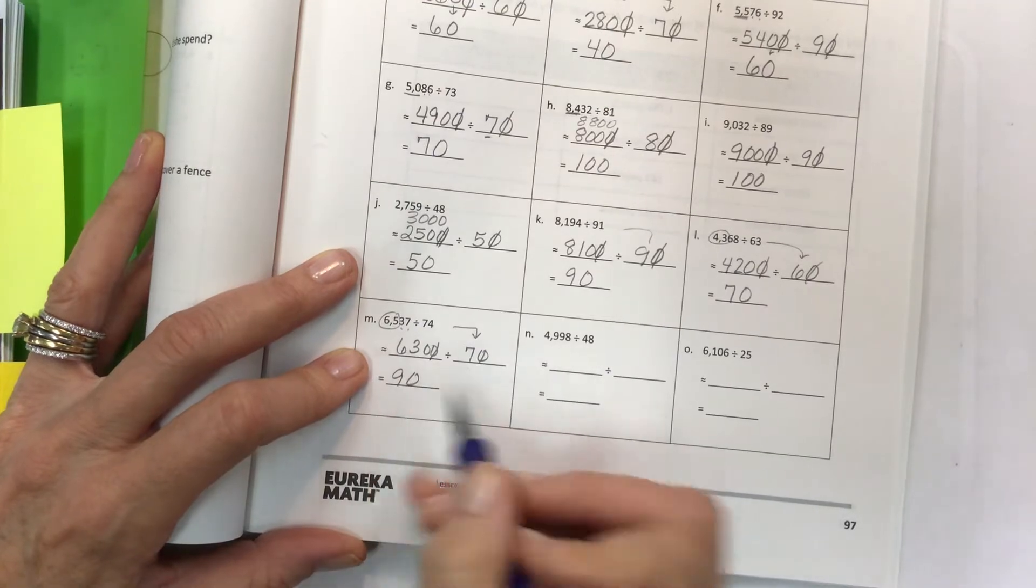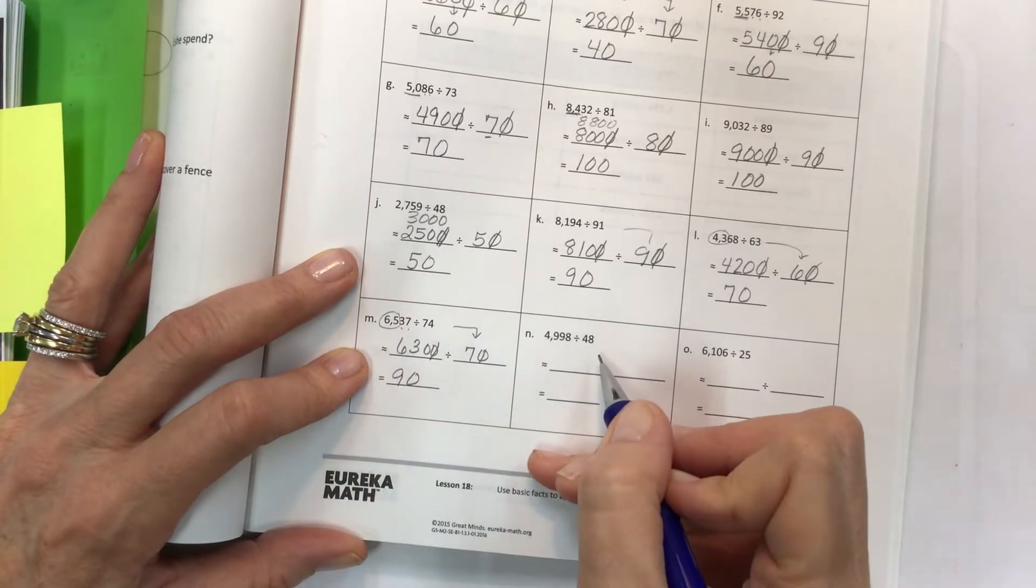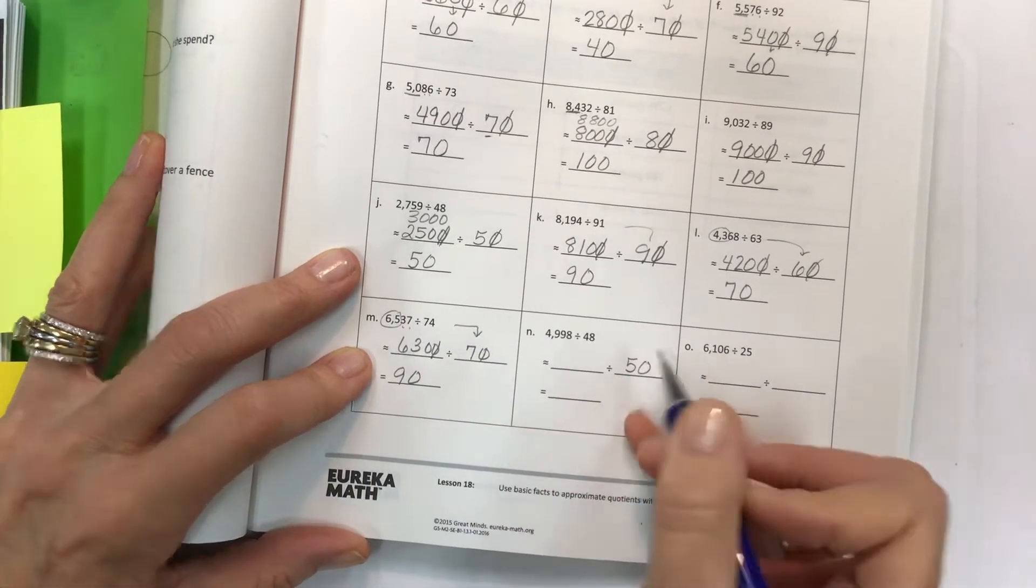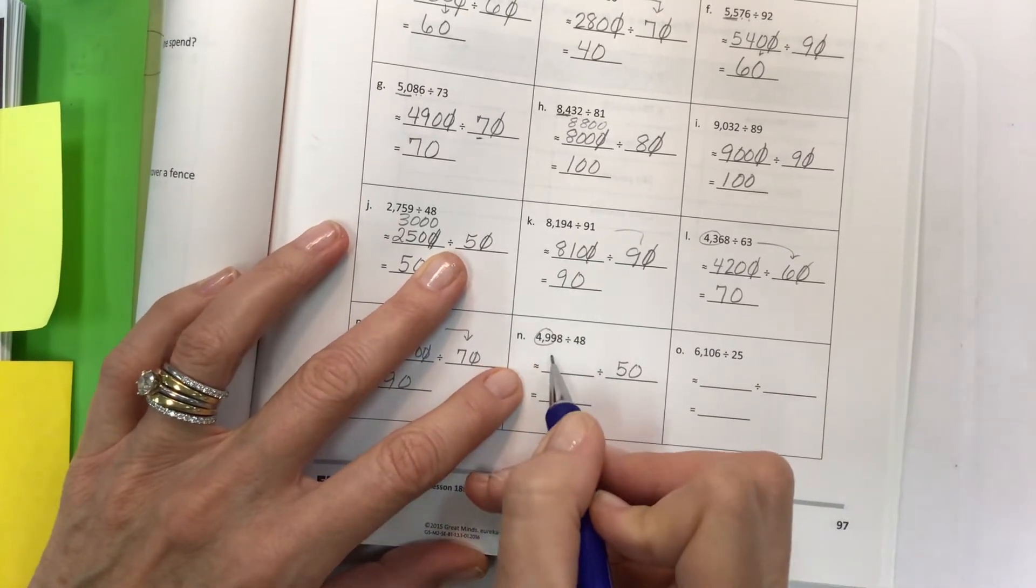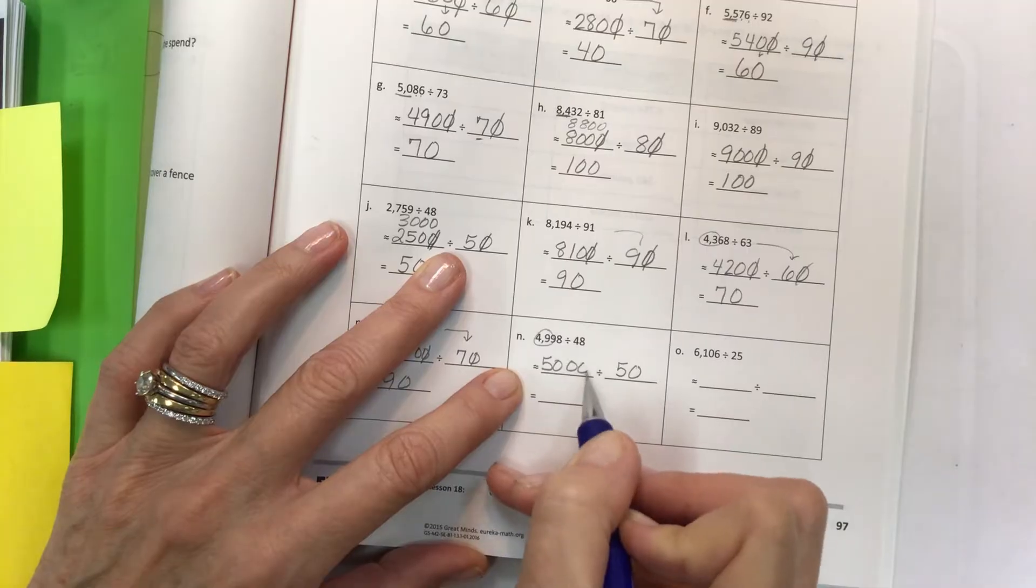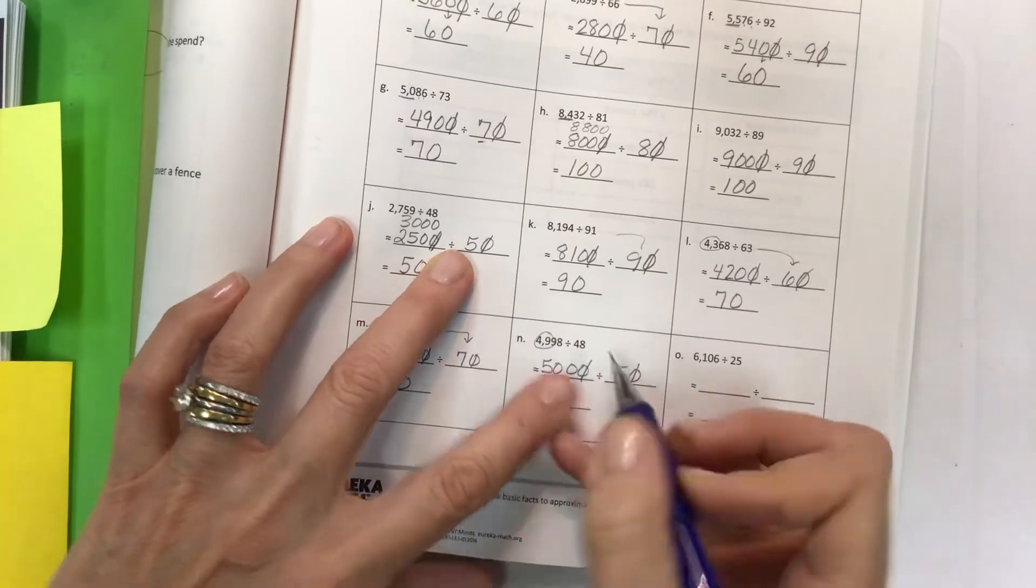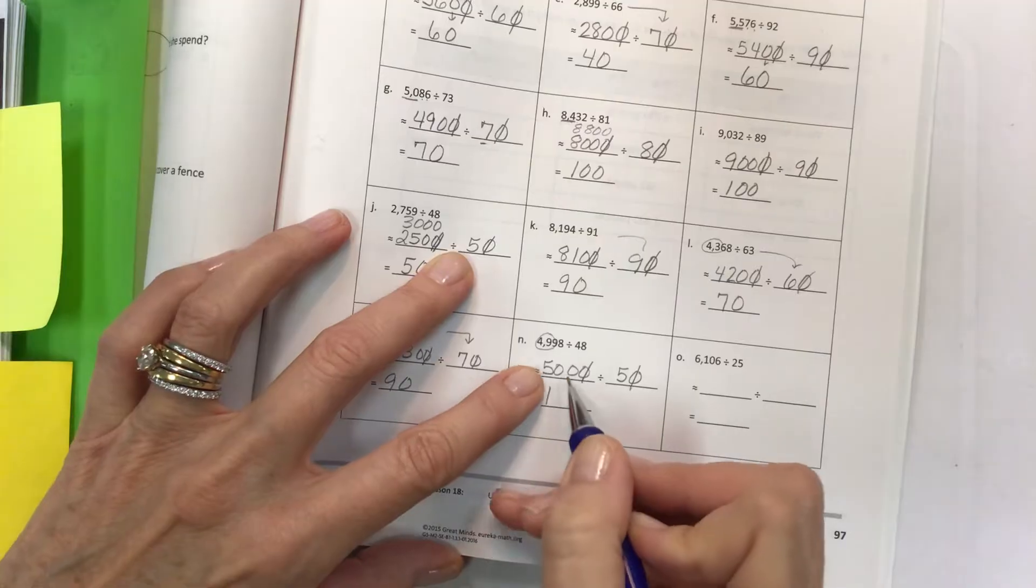End up with 90. Next one - I'm rounding the divisor first, I know you're surprised, right? And then we're going to be close to 49 which is 50. At this point you offset the zeros, and now you divide, and then you're left with a pair of zeros.